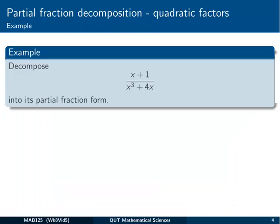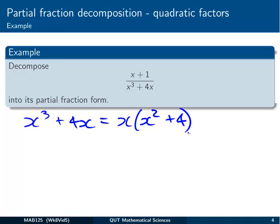So let's see it by example. Let's try to decompose x plus 1 over x cubed plus 4x. The first thing I'm going to do is note that x cubed plus 4x factors into x outside of x squared plus 4. And you notice we've now got a quadratic x squared plus 4, but we can't reduce that into linear factors, because x squared plus 4 only has complex valued roots.